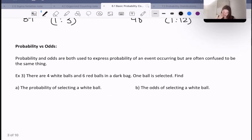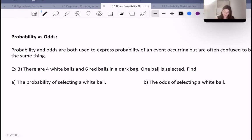Here's another example. If there are 4 white balls and 6 red balls in a dark bag and one ball is selected, what is the probability of selecting a white ball? Probability of a white ball is 4 over 10, which is the same as 2 over 5.